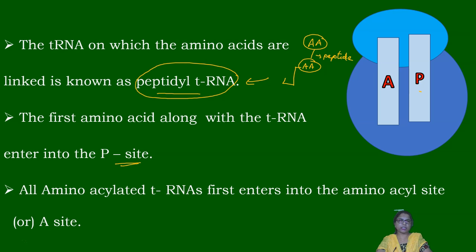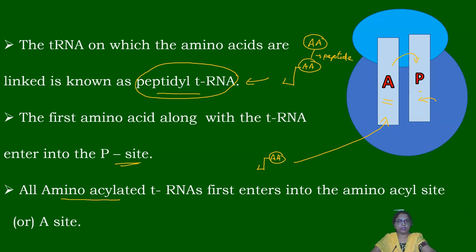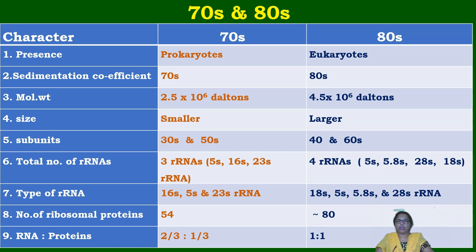The first amino acid along with its tRNA always enters the P site — this is the exception. All other aminoacylated tRNAs carrying a single amino acid first enter the A site and are then transferred to the P site.